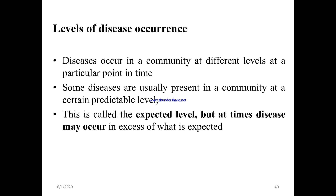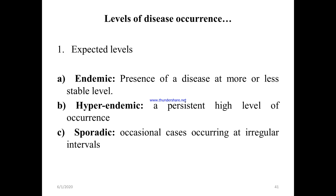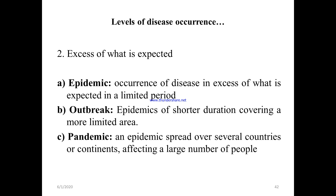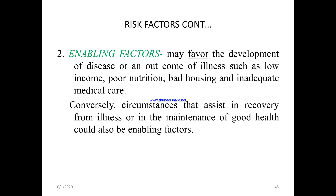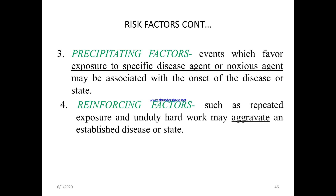Levels of disease occurrence: Endemic — presence of disease more or less stable. Hyperendemic — presence of a high level of occurrence. Sporadic — occurs occasionally at irregular intervals. Excess of what is expected: Epidemic — occurrence of disease exceeds what is expected in a limited period. Outbreak — epidemic of short duration covering a more limited area. Pandemic — epidemic spread over several countries or continents affecting a large group of people, like COVID-19. Factors contributing to disease causation include predisposing factors, enabling factors, precipitating factors, and reinforcing factors.